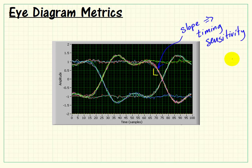Now, the slope, that's related to the timing sensitivity. And by slope, I'm referring to the slope in the vicinity of that zero crossing.